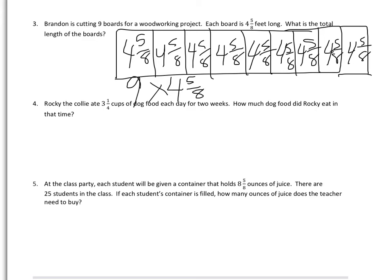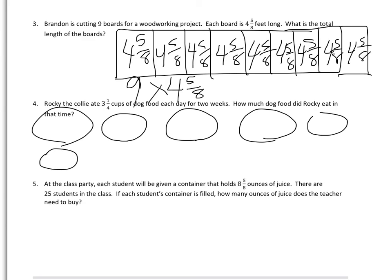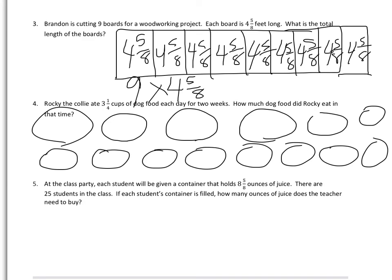For number 4, they want to show maybe a dog bowl. Because it says, Rocky the collie ate 3 and 1 fourth cups of dog food each day for 2 weeks. How much dog food did Rocky eat in that time? So I want to think about the dog's number of weeks. 1, 2, 3, 4, 5.